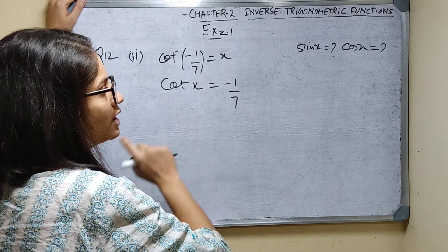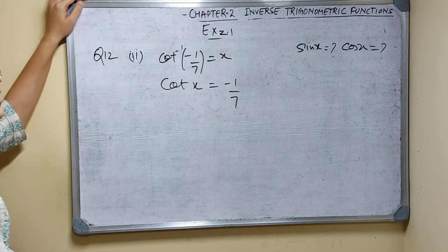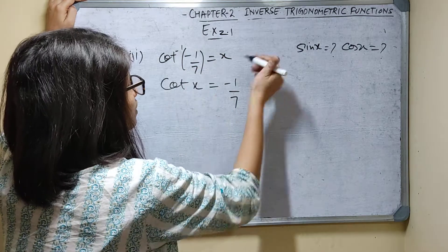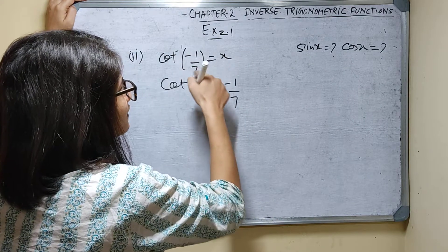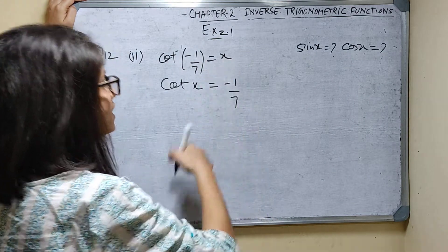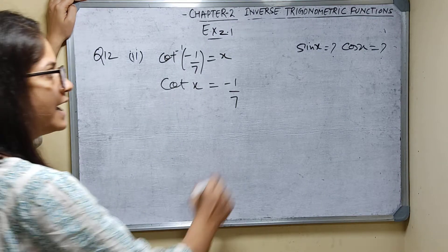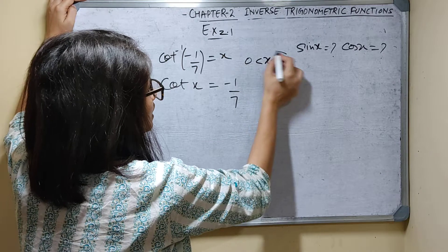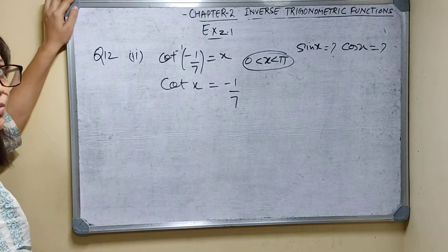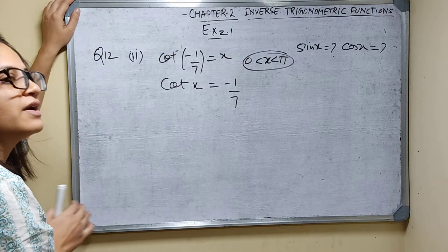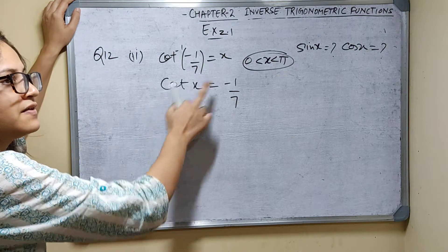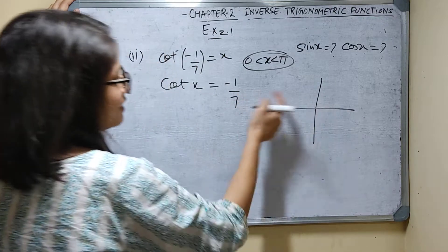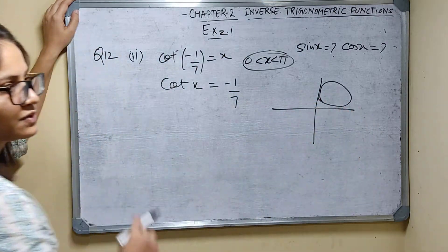Cot x value is negative. Now the range of cot inverse is 0 to pi only, so x lies between 0 and pi — meaning only first or second quadrant. Since cot x is negative and all values are positive in the first quadrant, it will definitely be in the second quadrant.